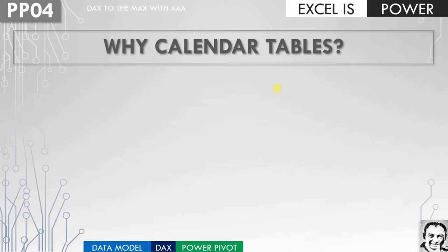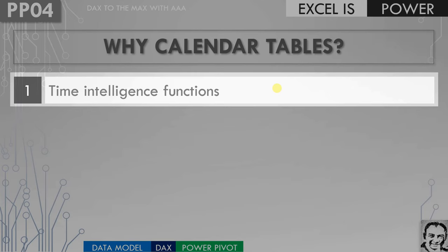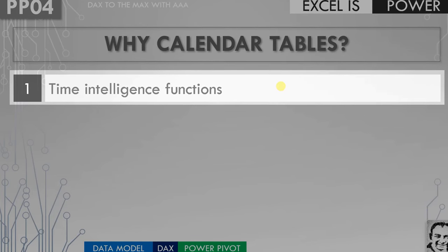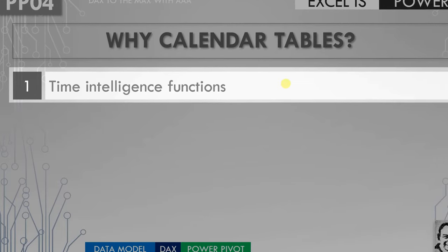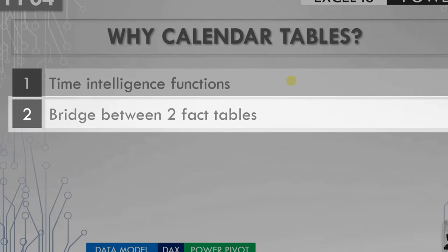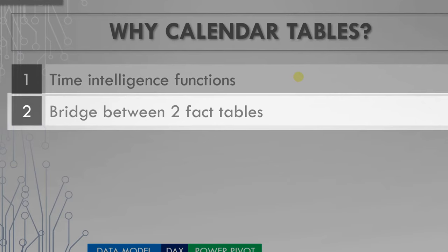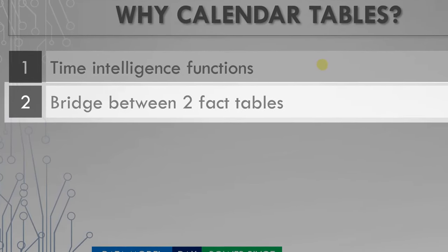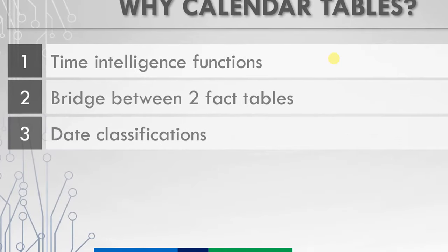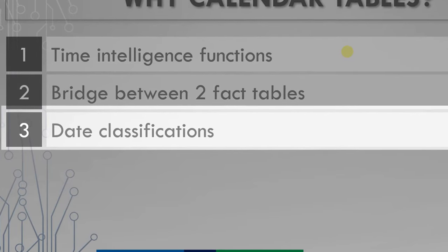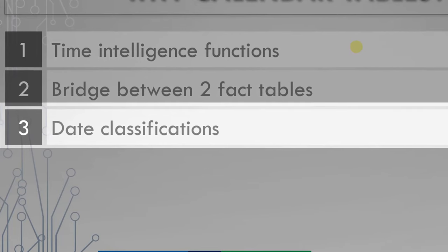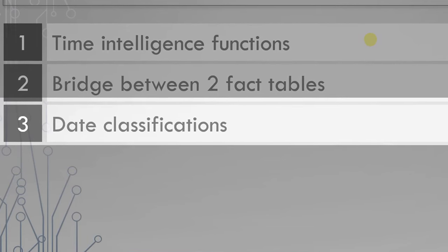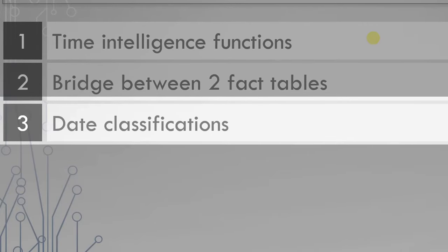Let's understand why we need calendar tables inside our data models. First, to use the time intelligence functions — a very powerful set of functions inside DAX — which we'll cover in the next video. You need a calendar table in your data model to use this functionality. Second, in some cases you need to bridge between two fact tables using a calendar table when each has its own calendar column. Third, you need date classifications — weeks, months, years, quarters — and adding those columns to your fact tables is not practical; it increases table size and consumes more resources. The ultimate solution is to create a calendar table, which reduces your file size.